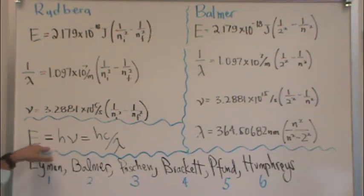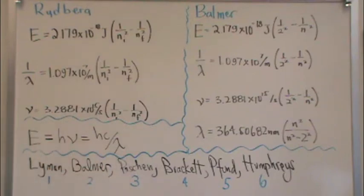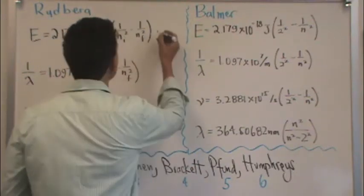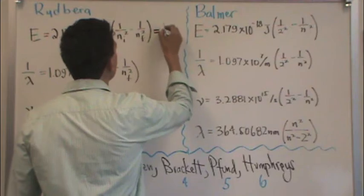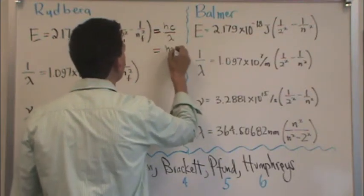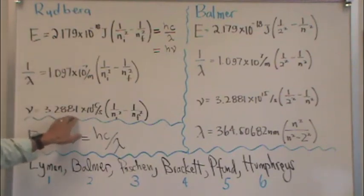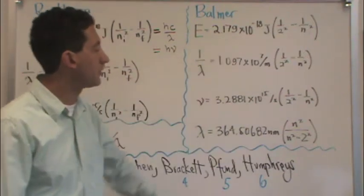Also, when you also remember that energy is h nu, or hc over lambda, you can pair that with the Rydberg equation as such. So you can set it equal, and this is in fact how you derive these other two equations. The same can be done for the Balmer series as well.